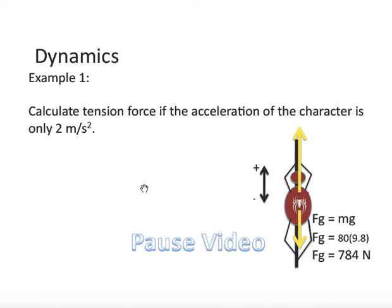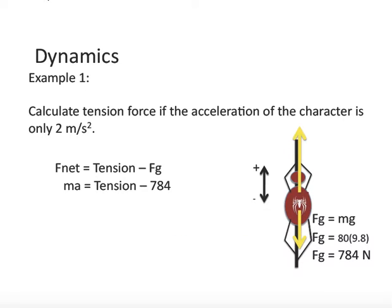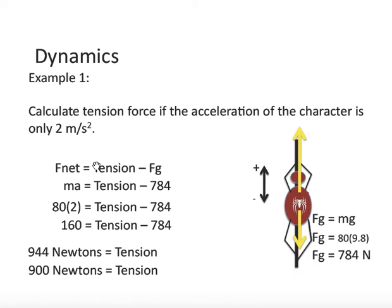I'd like you to redo this question. However, this time, I'd like you to calculate the tension force if the acceleration of the character is only 2 meters per second squared. Alright, I hope you tried this. Fnet equals tension, subtract gravity. MA equals tension, subtract 784, the force of gravity. Substituting, this time we know our acceleration and we're trying to solve for tension. And rearranging, we get 944 newtons. Or, with significant digits, only 900 newtons.